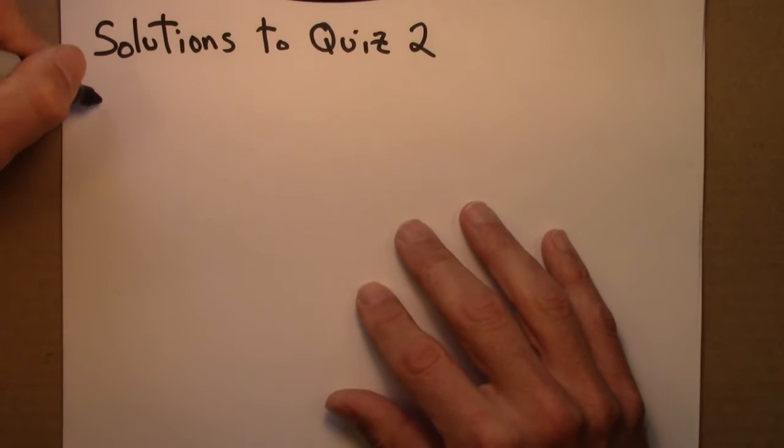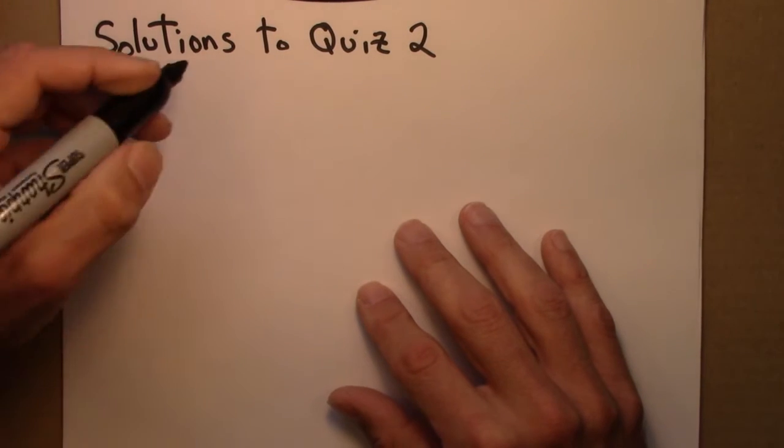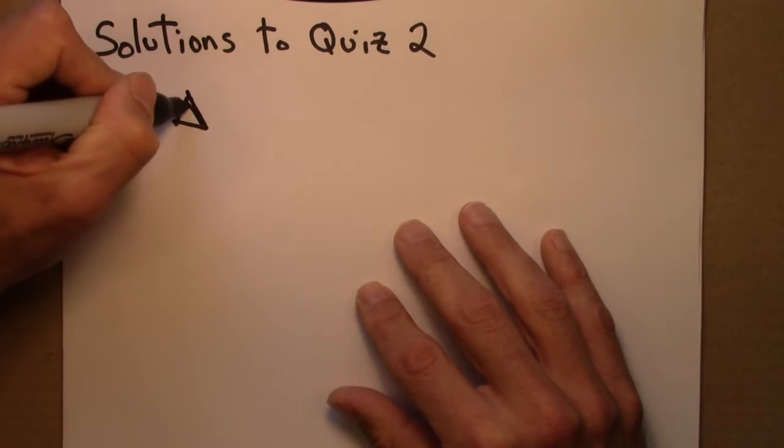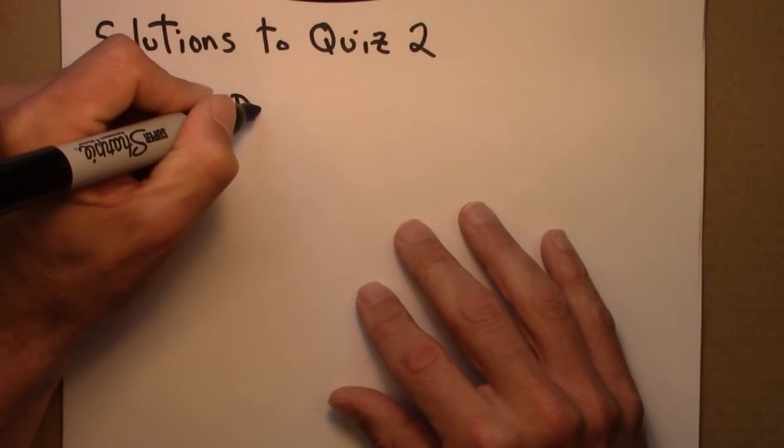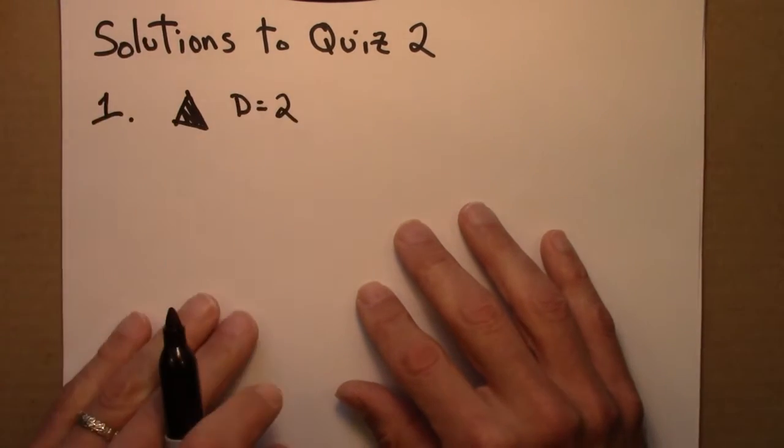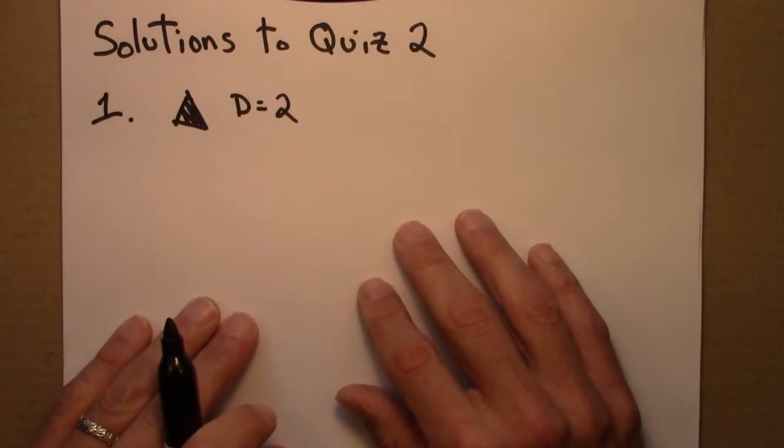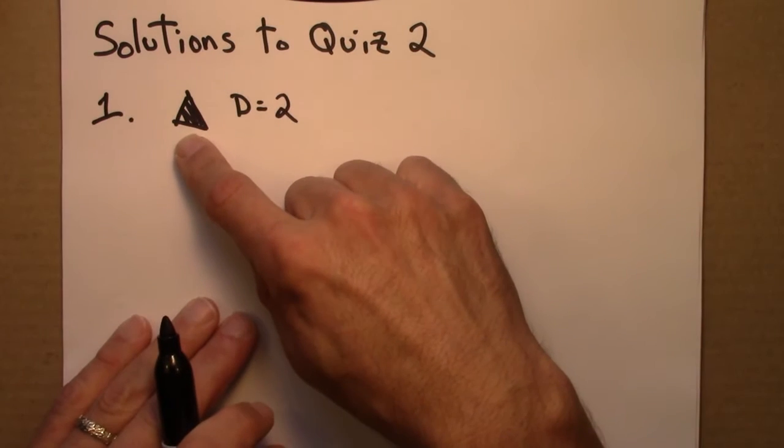Here are solutions to quiz 2. First, the triangle. Triangles are two-dimensional.